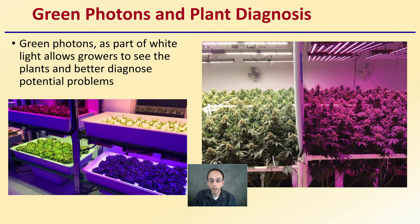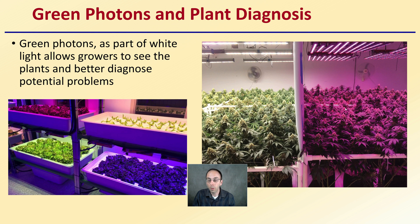Green photons as part of white light allow growers to see the plants and better diagnose potential problems. It is much easier to look at plants under full spectrum light than under high-power purple light to diagnose for diseases or look for nutrient deficiencies — and catching things early is really important. While plants may grow well under both, white light allows growers to diagnose plant problems at a much earlier stage when they are easier to control.